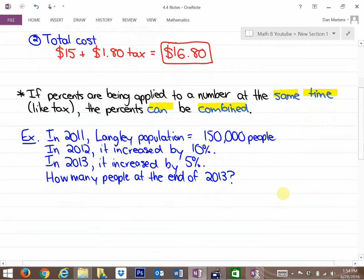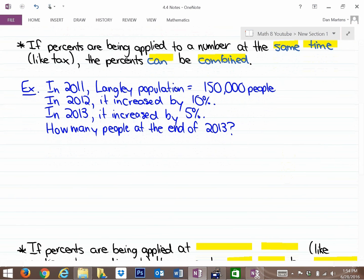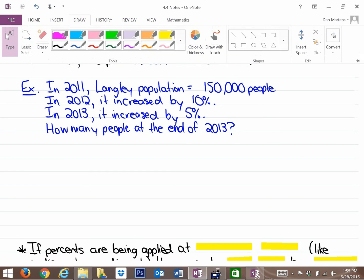Let's look at this next question. In 2011, the Langley population is 150,000 people. In 2012, that increased by 10%, and then in 2013, it increased by 5%. How many people are at the end of 2013? You might want to write down this problem before we start thinking about it.